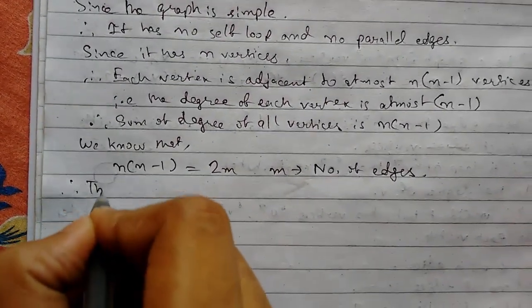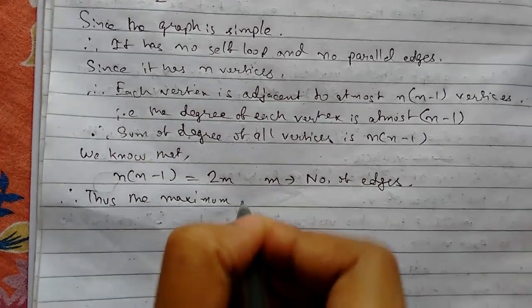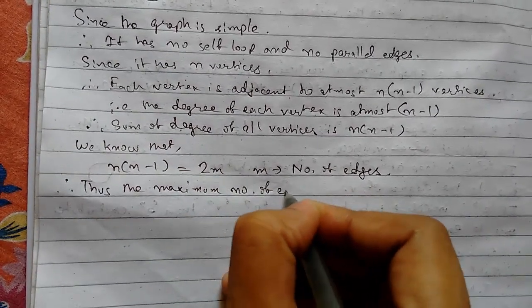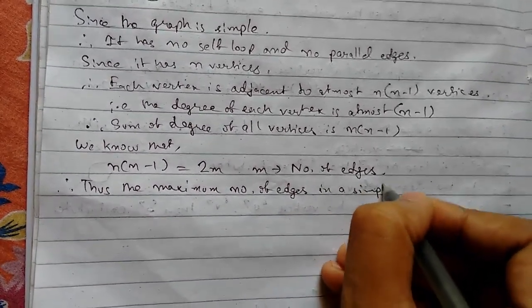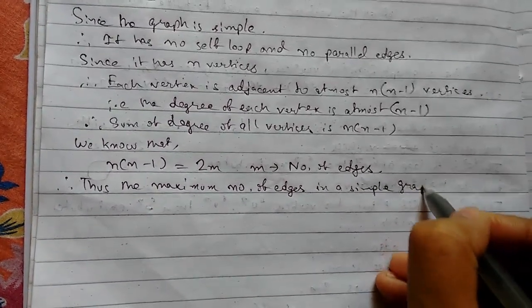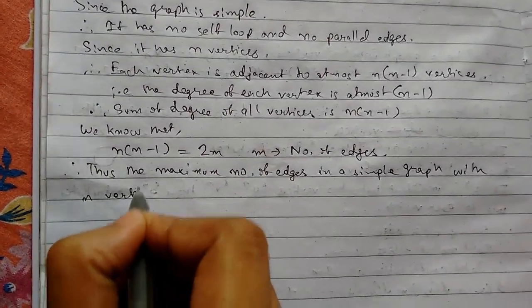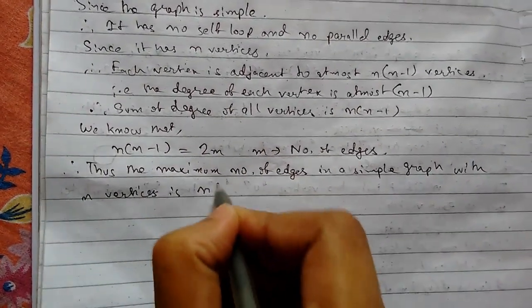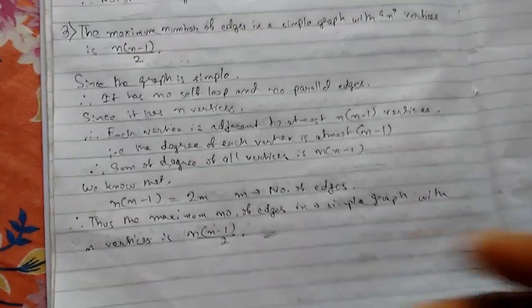Therefore, the maximum number of edges in a simple graph with n vertices is n(n-1)/2. So thank you for watching.